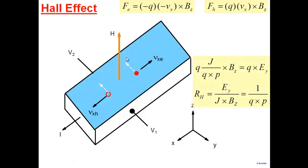At steady state, the Lorentz force — q times drift velocity v_x (written as current density divided by q×p) times B_z — is balanced by the force due to the accumulated charges, which results in an electric field E_y. So q×(J/qp)×B_z = q×E_y. Even though we applied voltage in x to cause current in x, applying a magnetic field sets up a new electric field E_y, and therefore a new voltage in the y-direction.